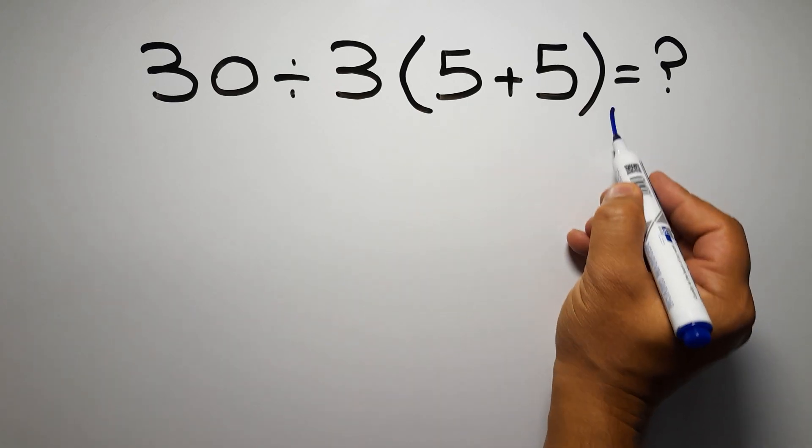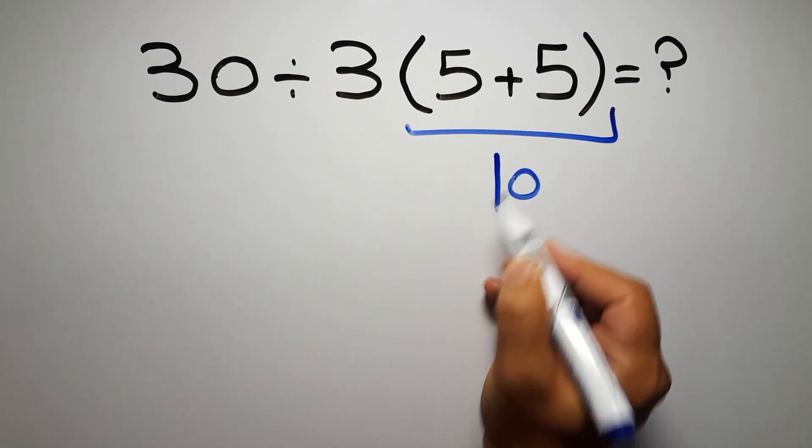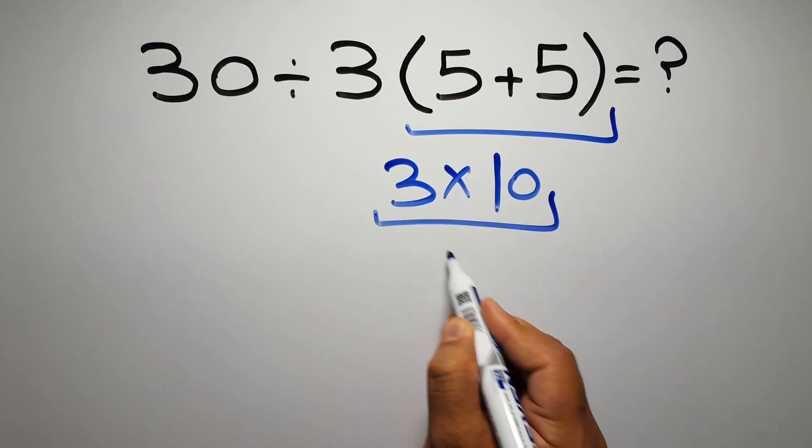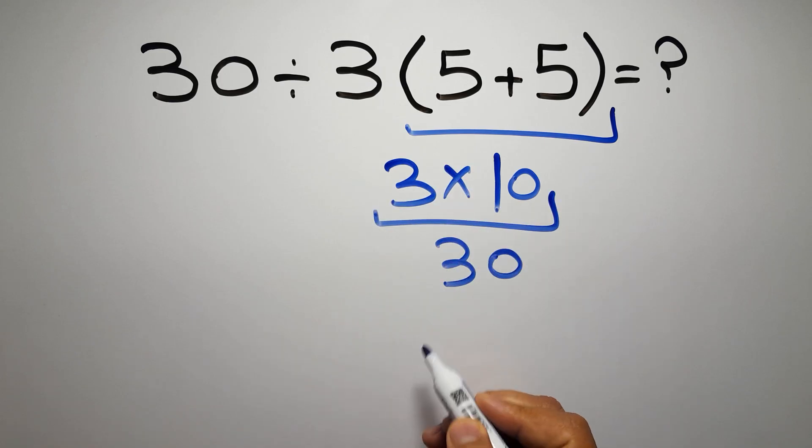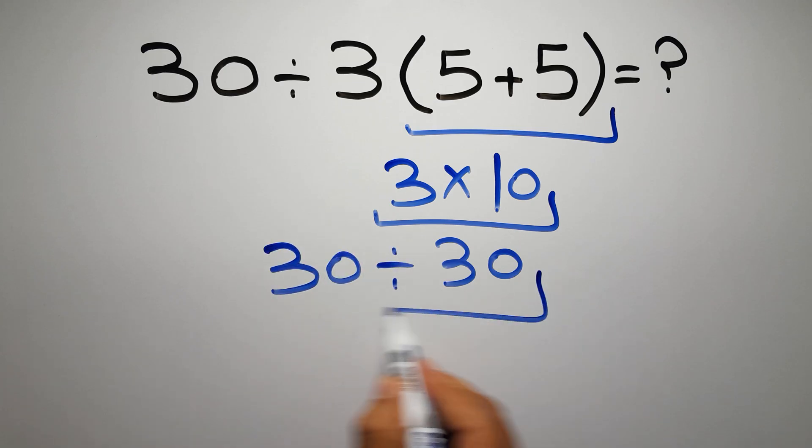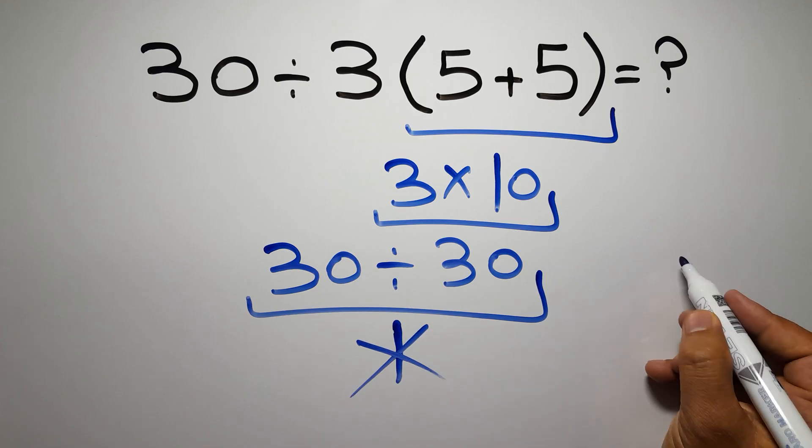5 plus 5 gives us 10, and 3 times 10 equals 30, so 30 divided by 30 is just 1. But this answer is not correct because according to the order of operations, first we have...